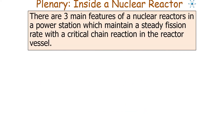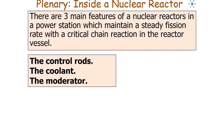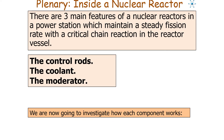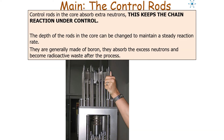There are three main features of a nuclear reactor in a power station which help maintain a steady fission rate with a critical chain reaction in the reactor vessel: the control rods, the coolant, and the moderator. Control rods in the reactor vessel absorb extra neutrons, which keeps the chain reaction under control. The depth of the rods in the core can be changed to maintain a steady reaction rate. Control rods are generally made out of boron because they absorb excess neutrons, and they become radioactive waste after the process.